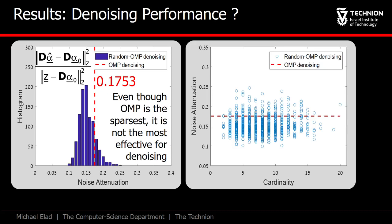You might be wondering, who of these solutions performs better? Are these the sparser solutions? This graph shows the denoising factor as a function of the cardinality. We see that the good denoisers are spread all over the range of cardinalities.